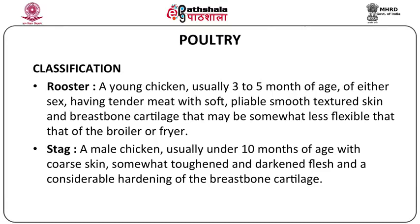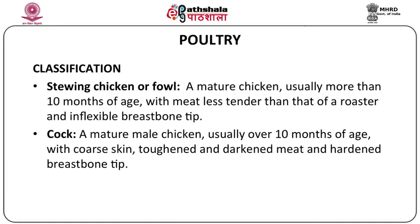That breast bone may be somewhat less flexible than that of the broiler or fryer. The third category is the stag — only a male chicken, usually under 10 months of age, with coarse skin, somewhat toughened and darkened flesh and considerable hardening of the breast bone cartilage. Next is the stewing chicken or fowl — a mature chicken, usually more than 10 months of age, with meat less tender than that of a roaster and an inflexible breast bone tip. Next we have the cock, a mature male chicken usually over 10 months of age with coarse skin, toughened and darkened meat and a hardened breast bone tip.